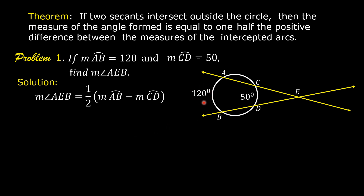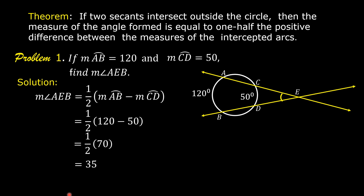Substitute 120 for measure of arc AB and substitute 50 for measure of arc CD. This is now equal to one-half times the quantity 120 minus 50, which equals one-half of 70. And one-half of 70 is equal to 35. So the measure of angle AEB is equal to 35 degrees.